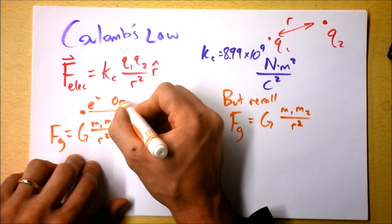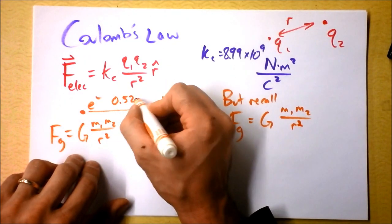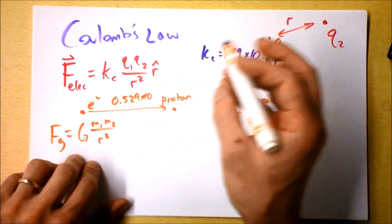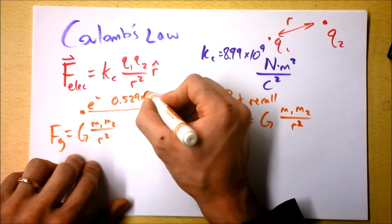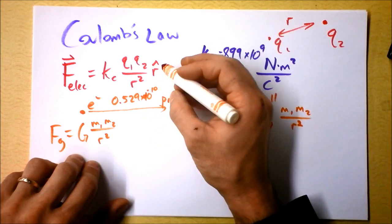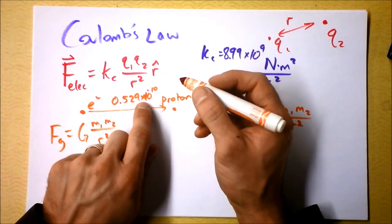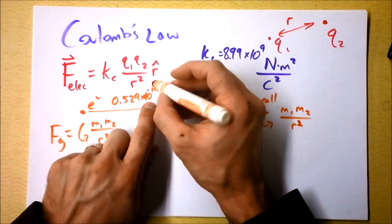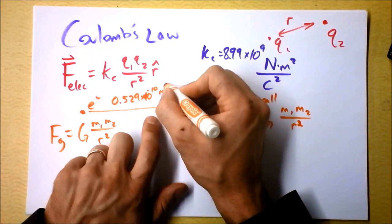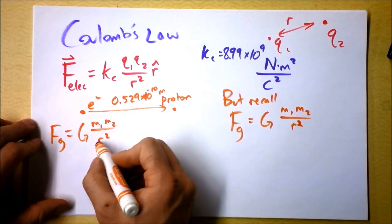You want to have them separated by the typical distance that they're separated in an atom, like a hydrogen atom, so we'd have to say this is 0.529 times 10 to the negative 10th. That's a half an angstrom, 10 to the negative 10th is an angstrom.